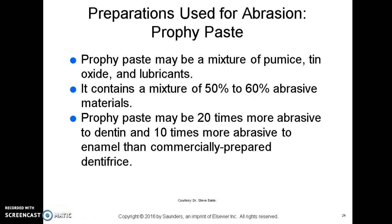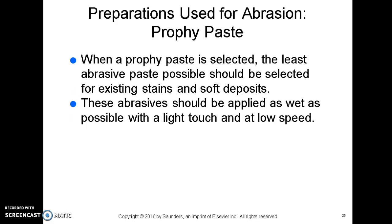Preparations used for abrasion: prophy paste is a mixture of pumice, tin oxide, and lubricants, containing 50 to 60 percent abrasive materials. Prophy paste may be 20 times more abrasive to dentin and 10 times more abrasive to enamel than a commercially prepared dentifrice — that's toothpaste — so it is quite abrasive. This is why in clinical practice you are only allowed to use toothpaste or extra fine prophy paste on your peer partner. When selecting prophy paste, choose the least abrasive paste appropriate for the existing stain and deposits, applied as wet as possible with a light touch and at low speed to avoid abrading too much tooth structure.